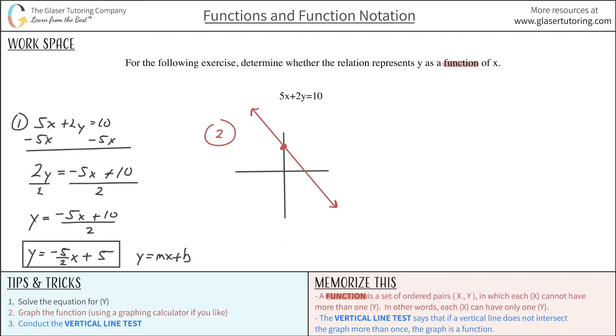The third step now is to conduct the vertical line test. The vertical line test basically states that if a vertical line does not intersect the graph more than once, then the graph is a function.